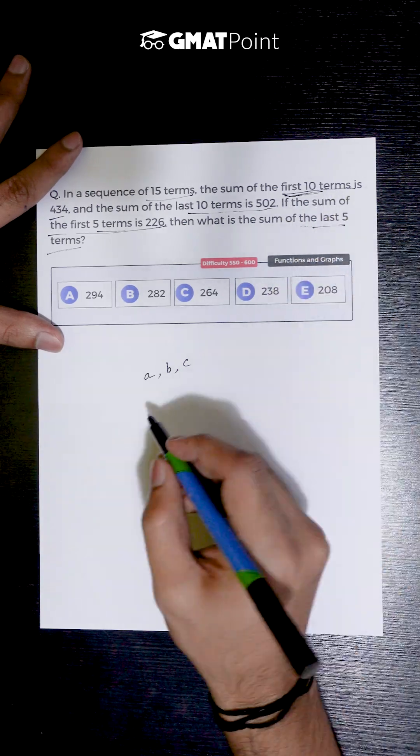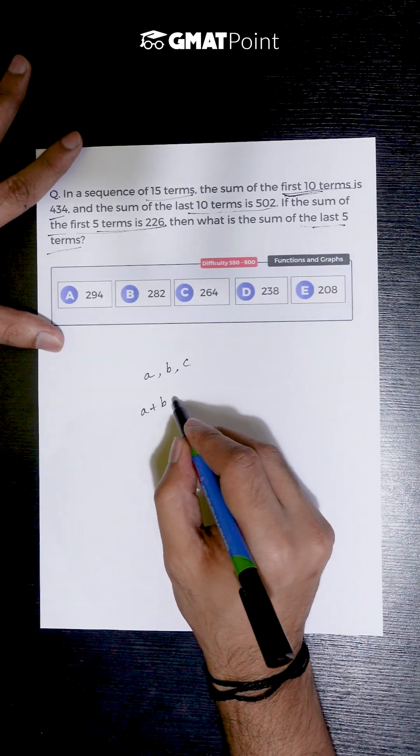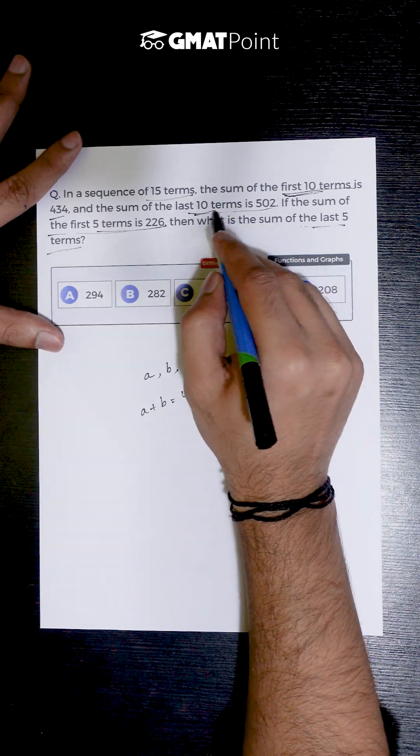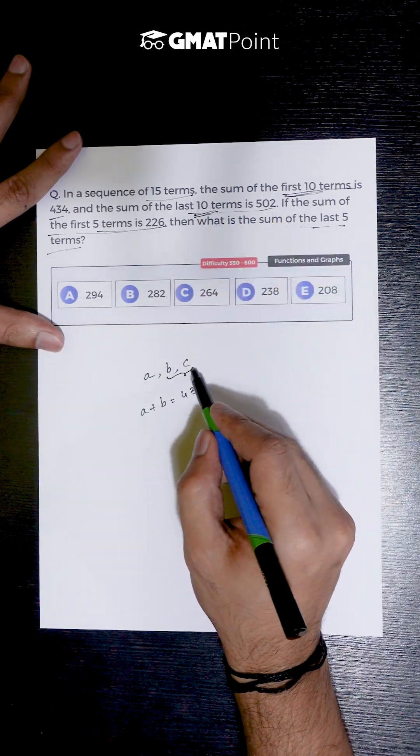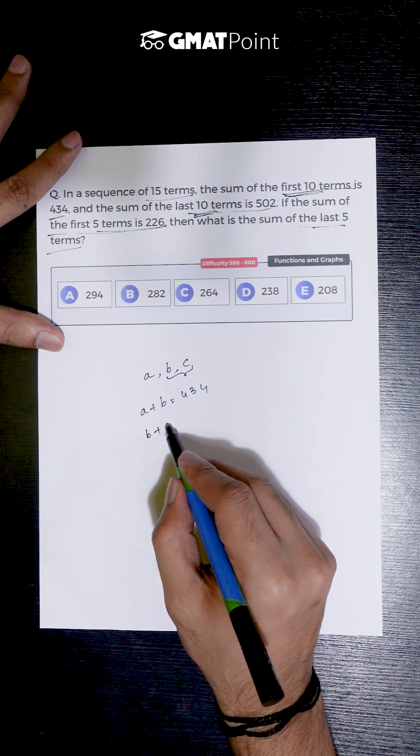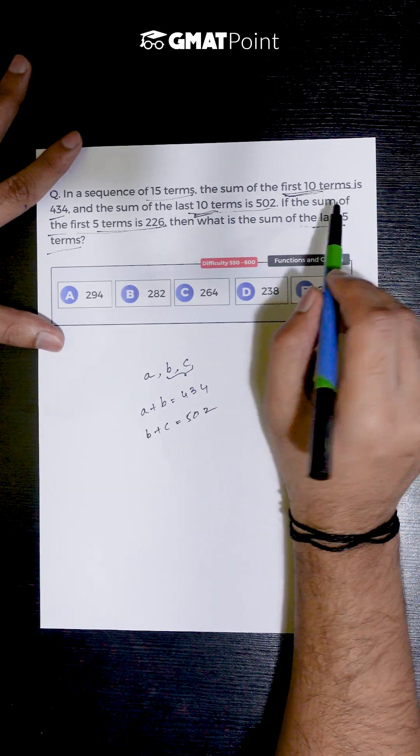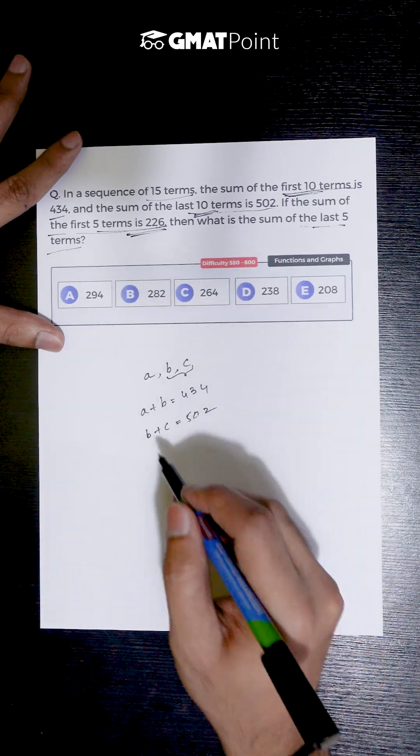So the sum of the first 10 terms would be nothing but the value of a plus b, which is given to be 434. And the sum of the last 10 terms would be the sum of b plus c, which is given to be 502. And we are also given that the sum of the first 5 terms is 226.